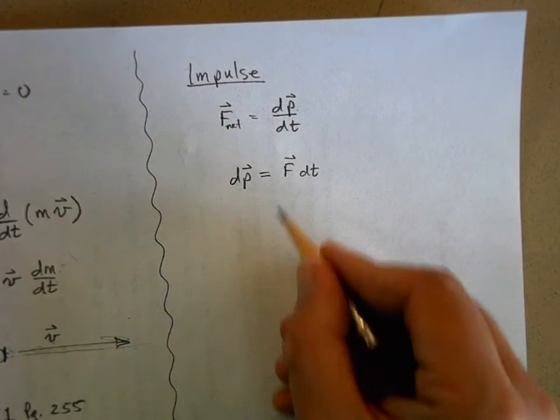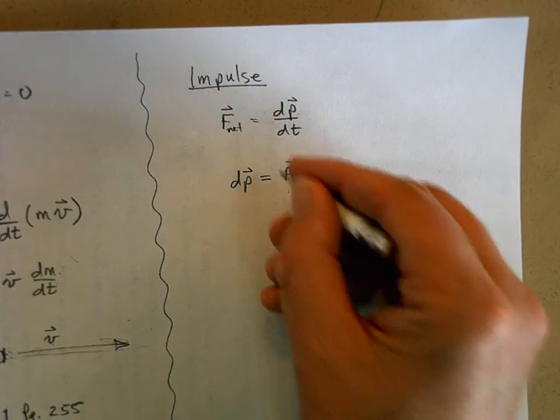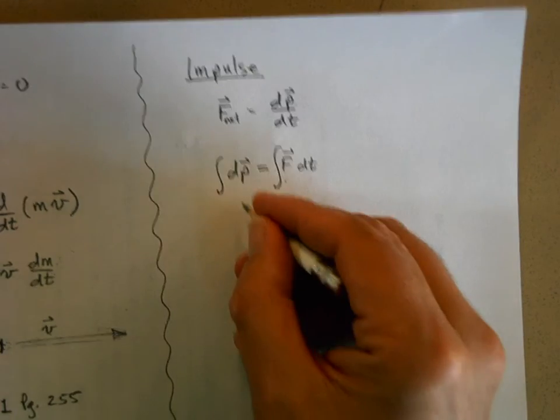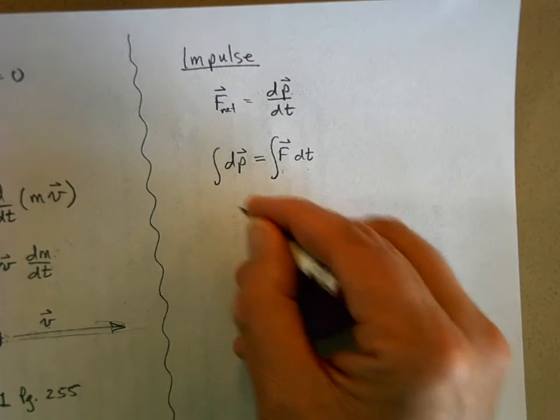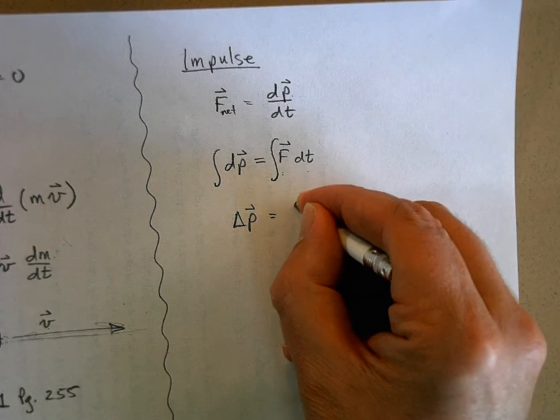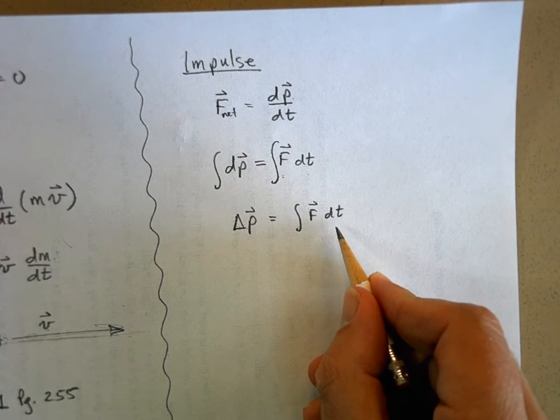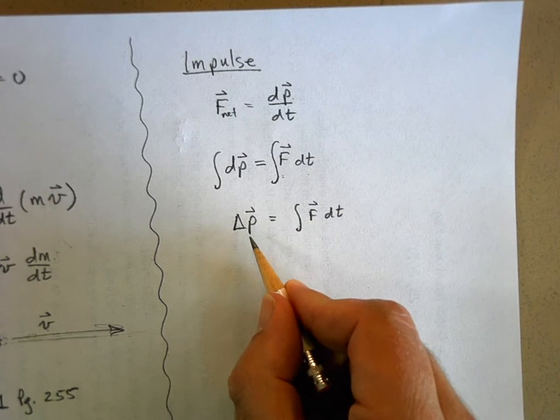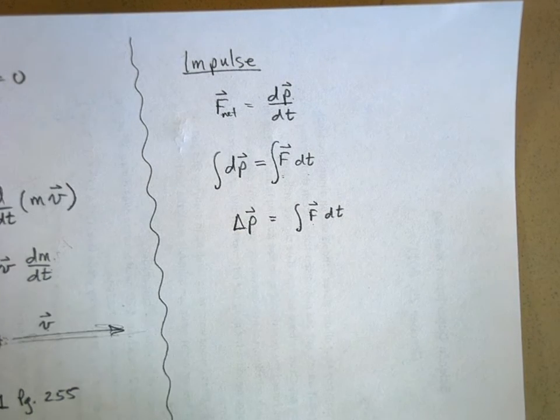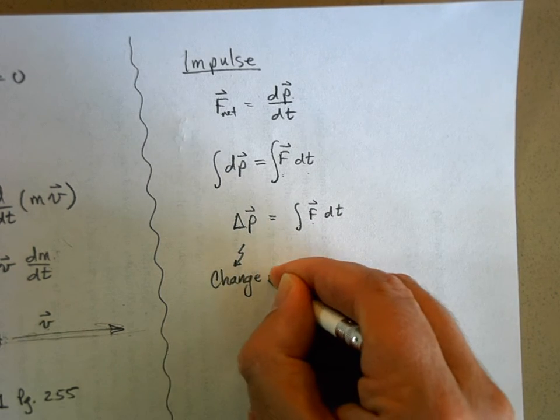Now if I integrate this so that I add up all the little tiny products of force times time, I get here when I add up all the little tiny changes in momentum, I get the total change in momentum, delta p. Here I've got just F times time. Remember, force is a vector but time is a scalar, and so this change in momentum is a vector. So here we have a product of a vector times a scalar and it gives me a vector. This is a change in momentum.